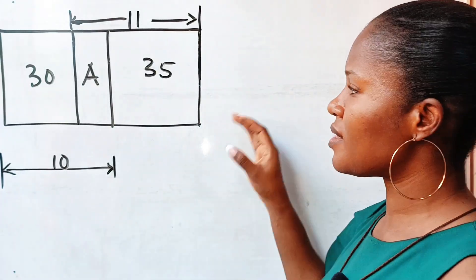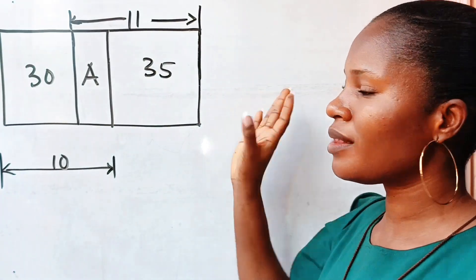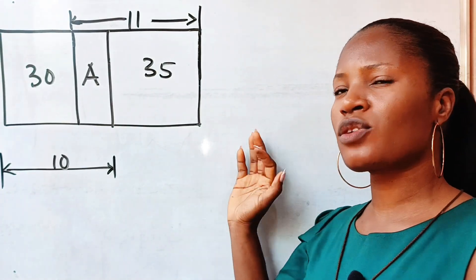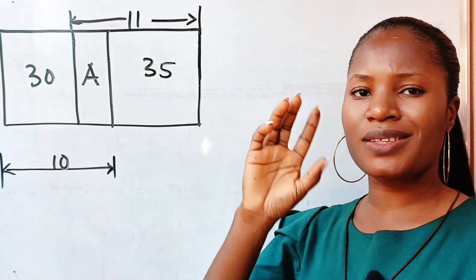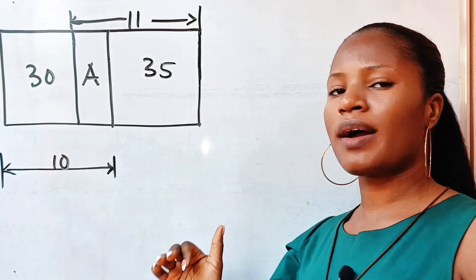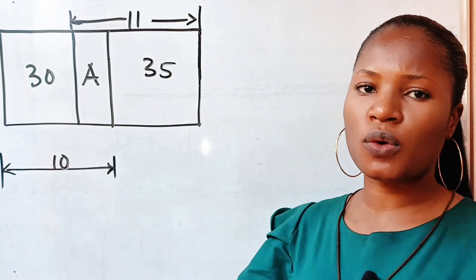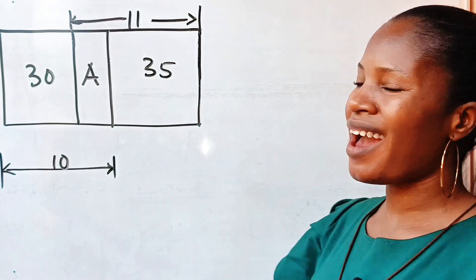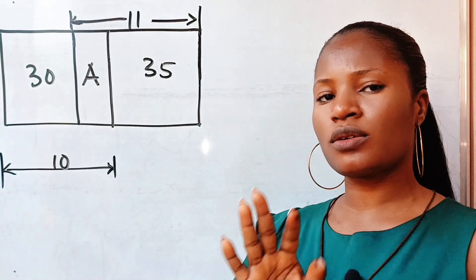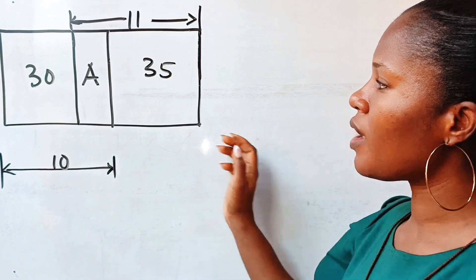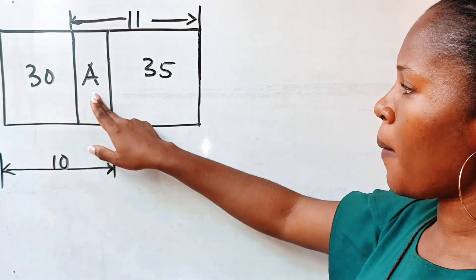Let's solve this using three more methods. We have solved it before with a different method — you can go and check if you did not watch that video. So we still have three extra methods we can use to get the value of A.